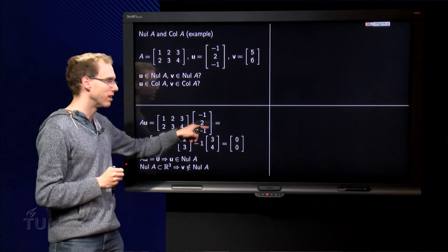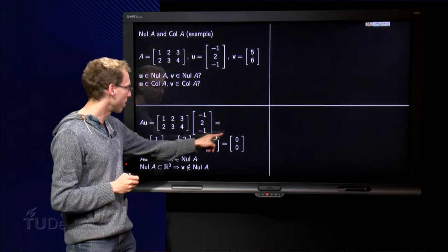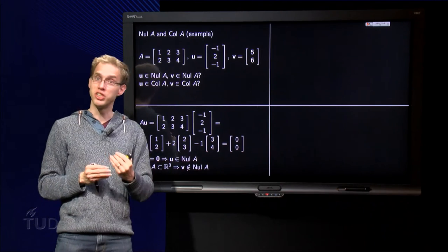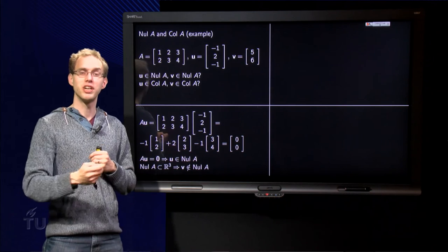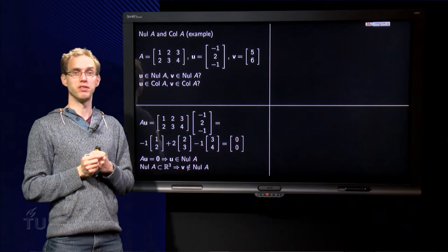Minus 1 plus 4 minus 3 equals zero, and minus 2 plus 6 minus 4 equals zero. So A times u equals the zero vector, so u is in the null space of A.